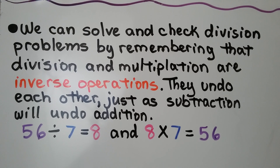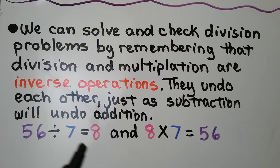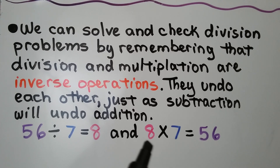We can solve and check division problems by remembering that division and multiplication are inverse operations — they undo each other, just as subtraction will undo addition. 56 divided by 7 is equal to 8, and 8 times 7 is equal to 56. The dividend here will become the product, and the divisor and quotient will be factors in multiplication.